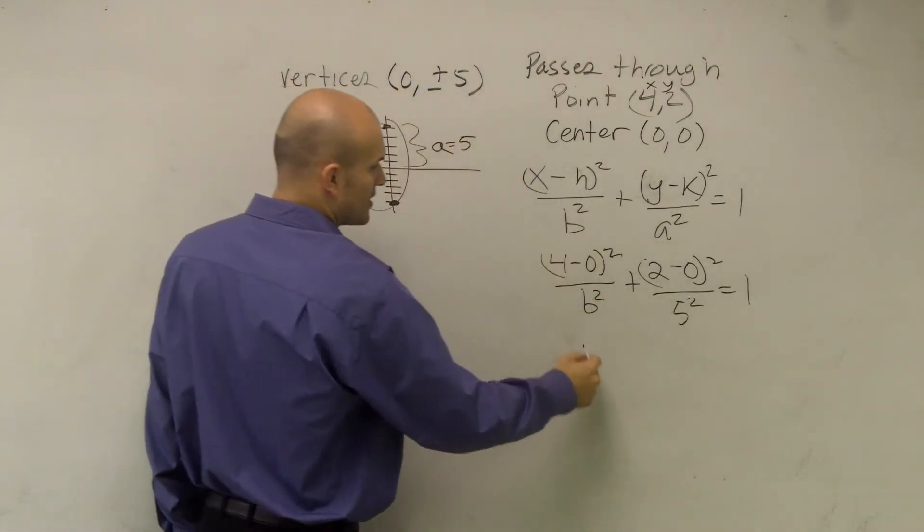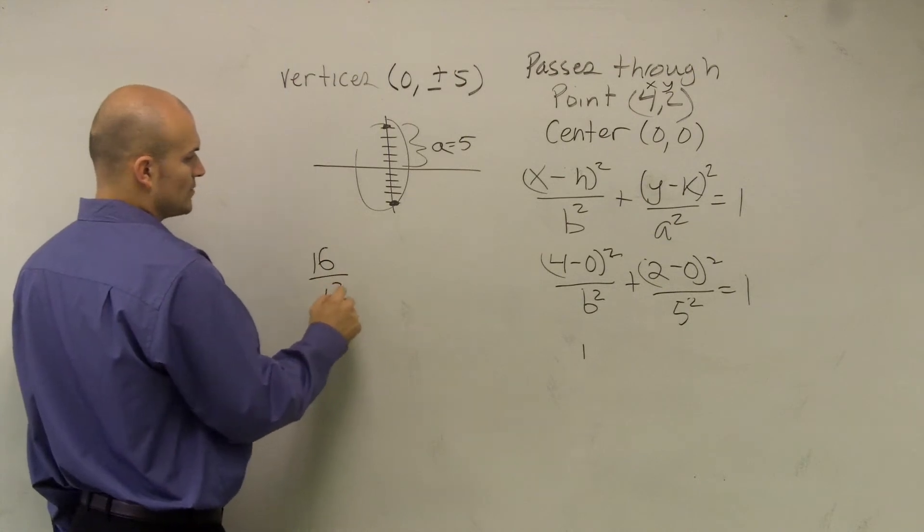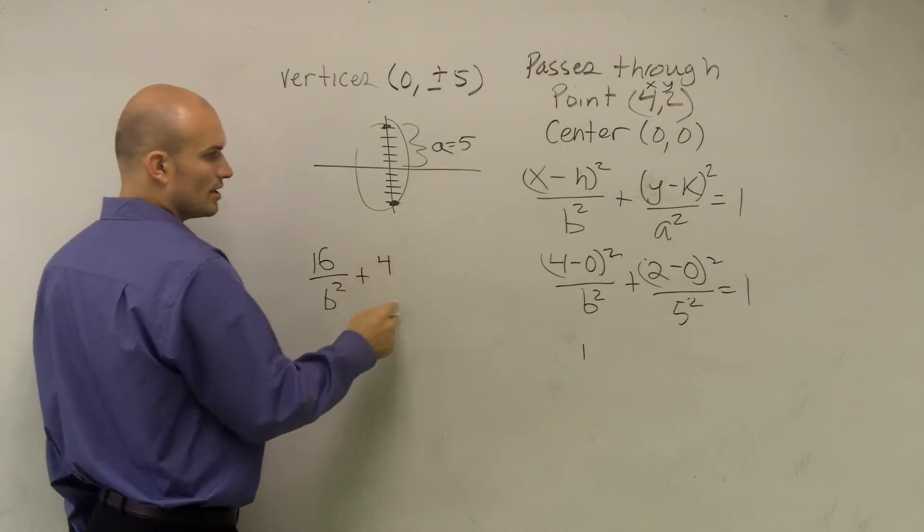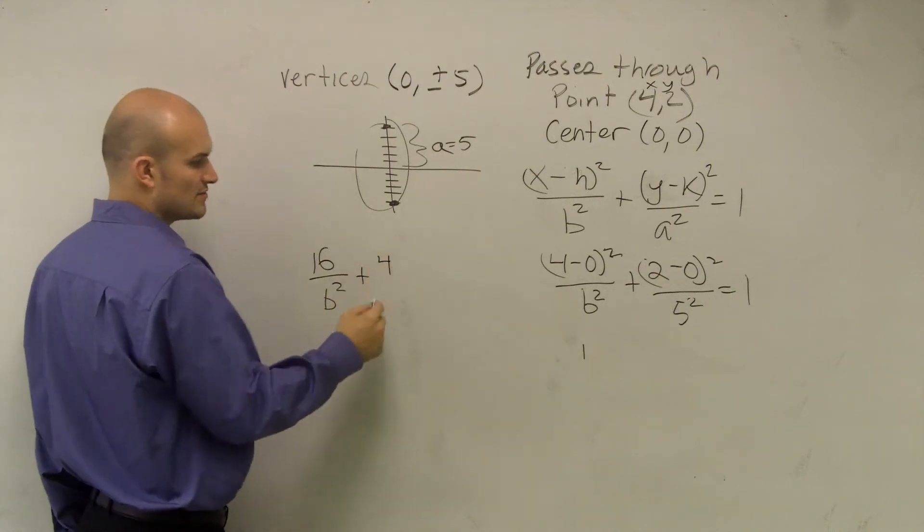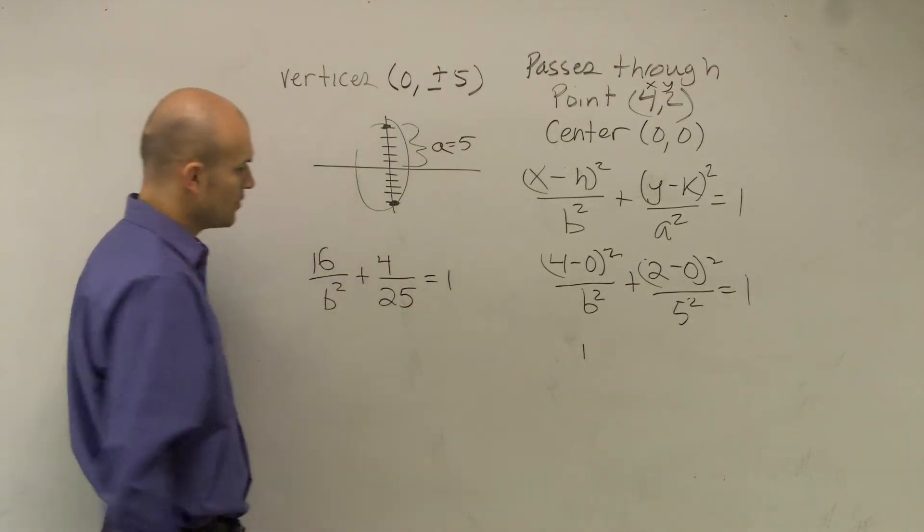Obviously 4² gives me 16/B² plus 4, because 2 - 0 is 2, 2² is 4, over 25 equals 1.